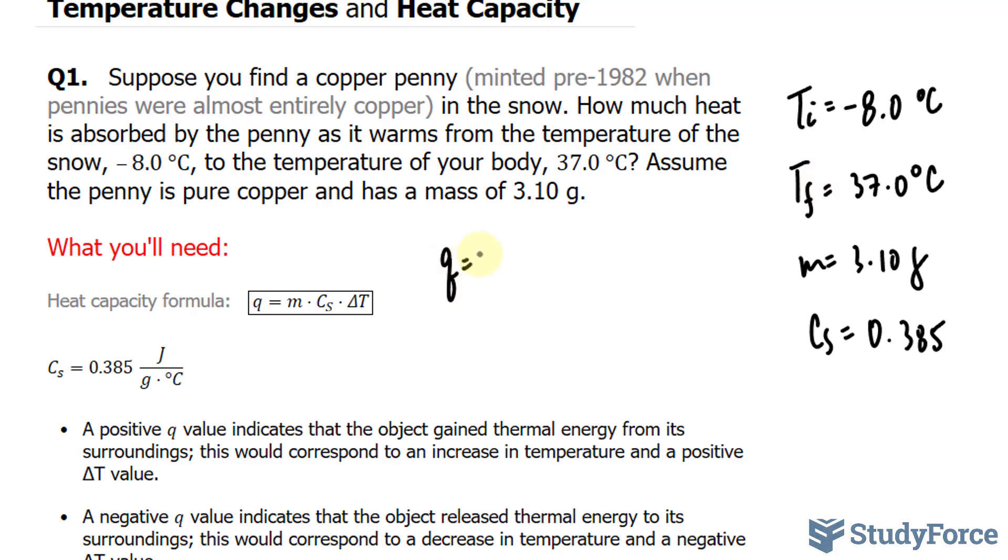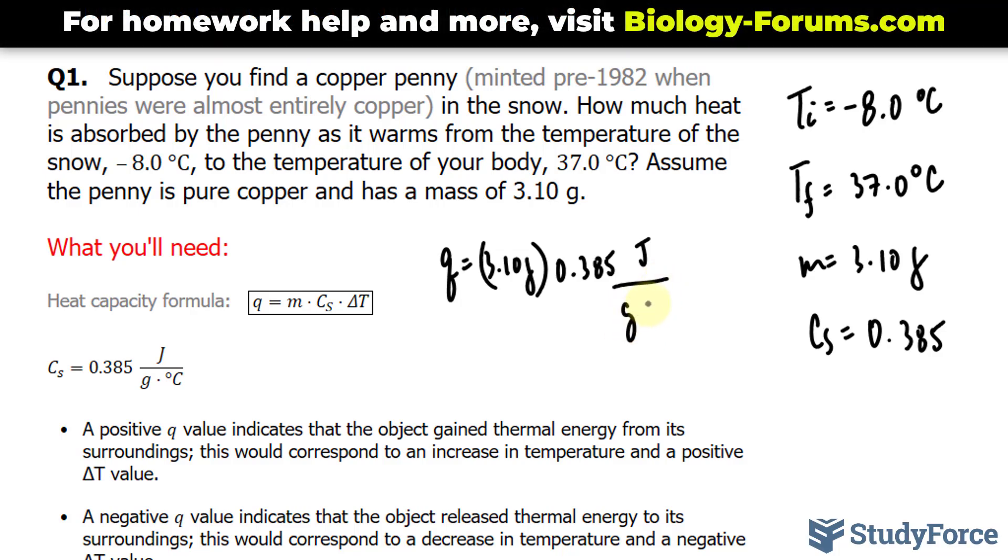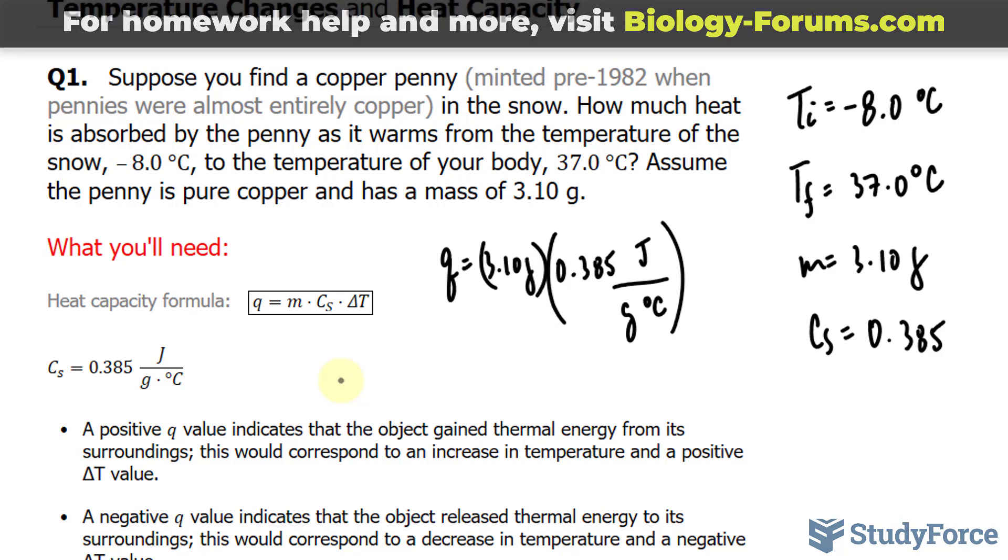We have Q equals our mass of 3.10 grams. That's being multiplied to this number, 0.385, and I'll write the units down just to show you how they all cancel out. Grams times Celsius, and this is being multiplied to delta T.